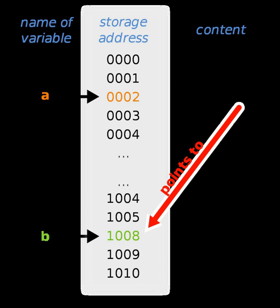The Perl programming language supports pointers, although rarely used, in the form of the pack and unpack functions. These are intended only for simple interactions with compiled OS libraries. In all other cases, Perl uses references, which are typed and do not allow any form of pointer arithmetic. They are used to construct complex data structures.